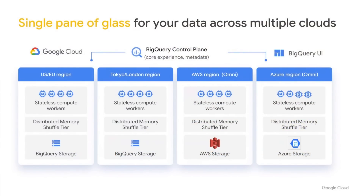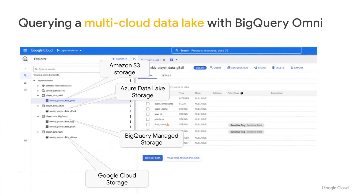BigQuery Omni provides a single unified view for your data across all clouds. It is serverless — we manage all of your infrastructure and hardware needs — and we provide secure management of your data across AWS, Azure, and GCP. For example, consider a gaming company that has different titles and player data spread across S3, Azure Data Lake, BigQuery Managed Storage, and Google Storage. All of these data sources are available to an analyst or data scientist in a single unified view, queryable using BigQuery UI and familiar SQL language. You can also set access policies and tags for consistent fine-grained governance operations across all of this data.